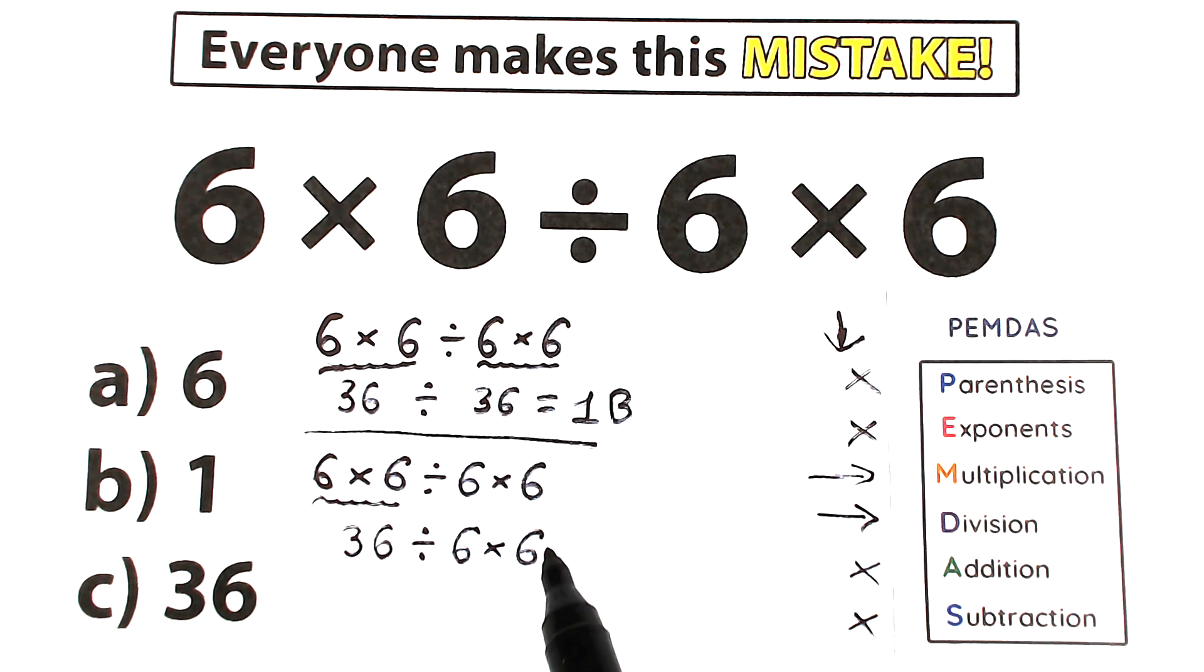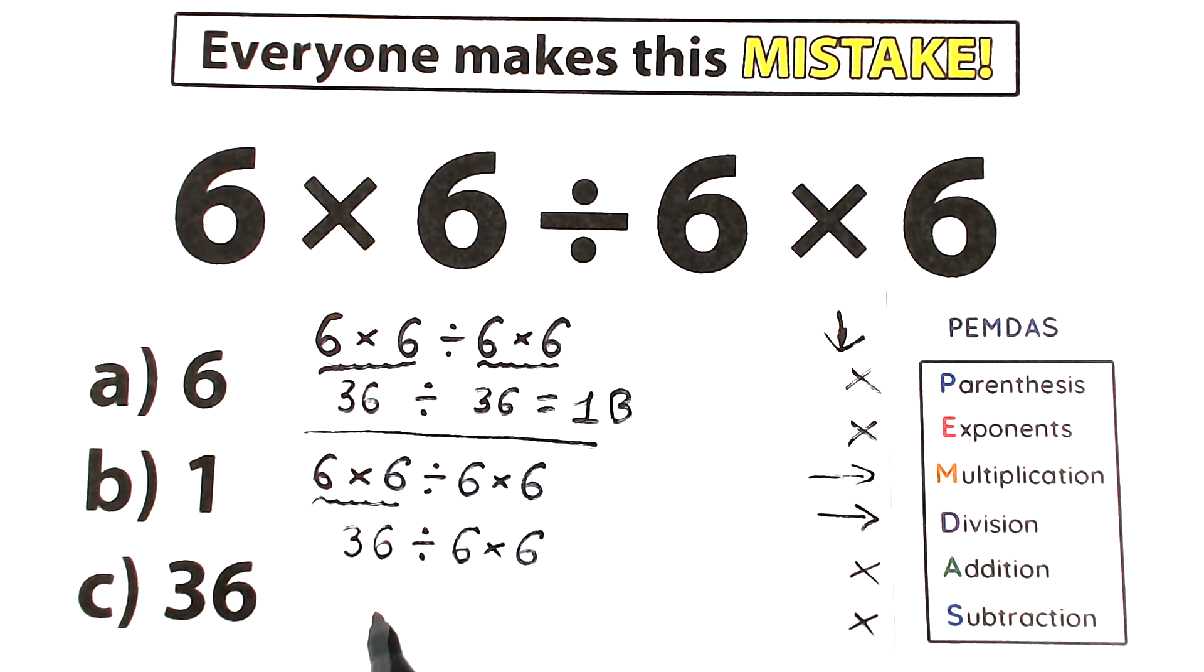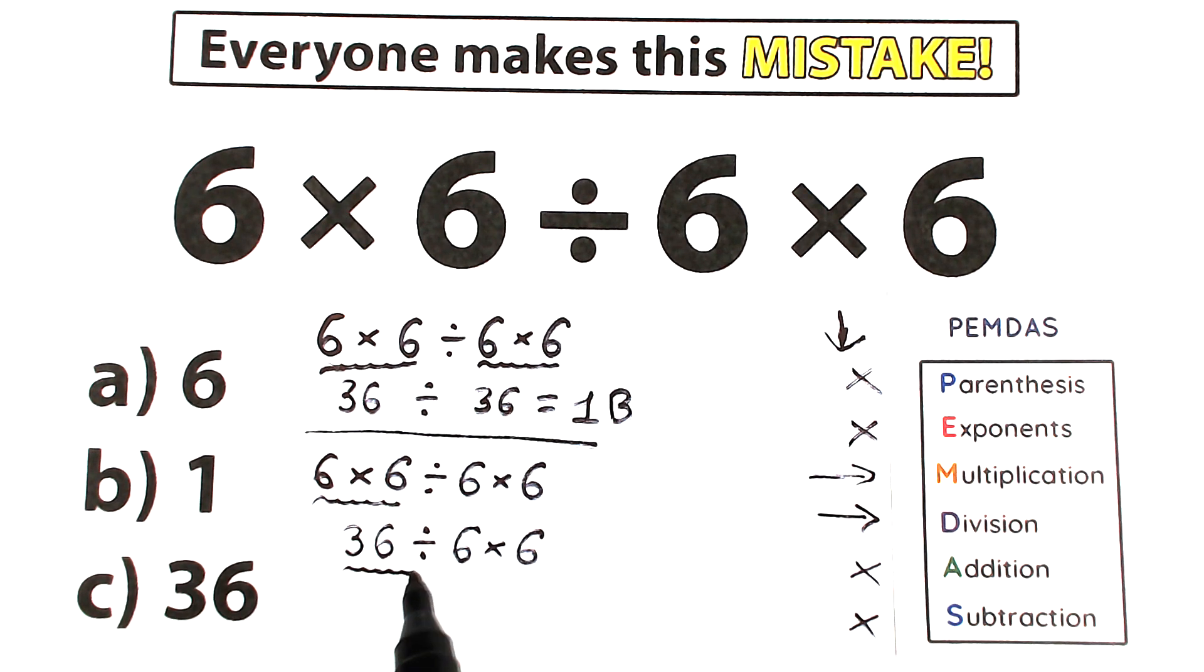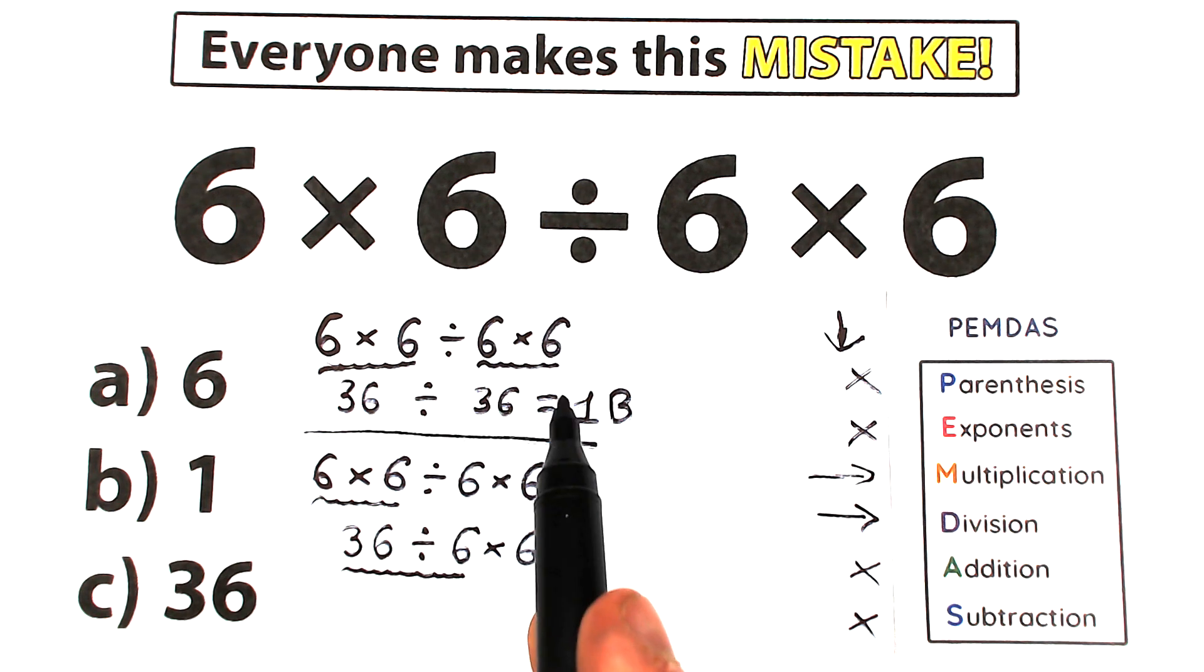So as you can see, we have a little bit difference with this solution, because we multiplied 6 times 6 before, but right here we just rewrite it, and once more we scan what is the first sign from left to right. But in this case, the first sign from left to right is this division, not multiplication on the right as we solved it before.